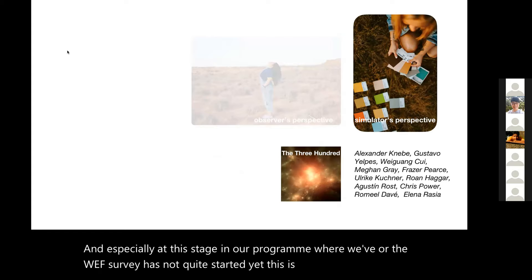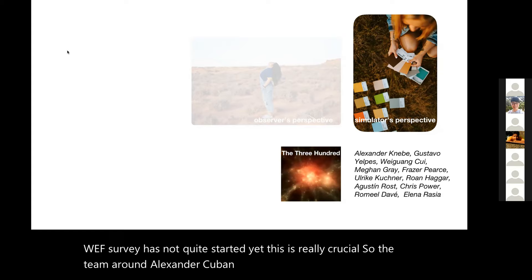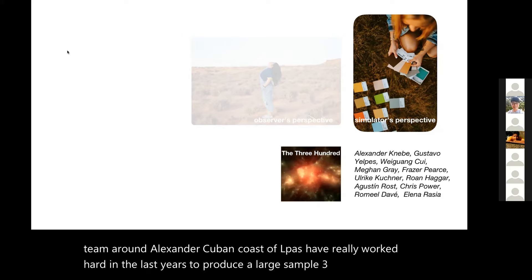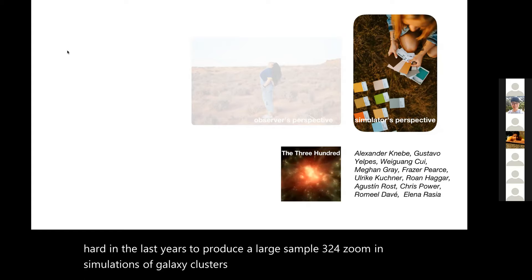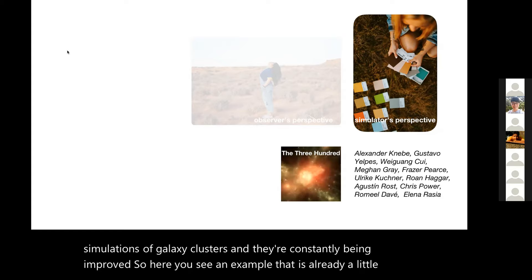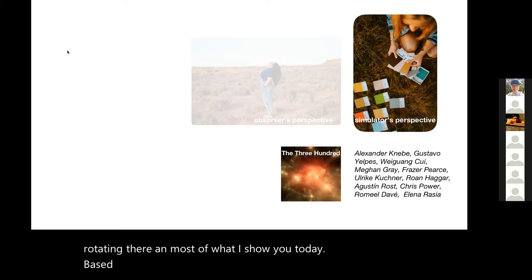The 300 collaboration is a group of theorists and simulators that add this critical simulators' perception to this problem. Especially at this stage in our program where the WEAVE survey has not quite started yet, this is really crucial. The team around Alexander Knebe and Gustavo Yepes have worked hard to produce 324 zoom-in simulations of galaxy clusters. Here you see an example rotating there, and most of what I show you today is based on the 300.